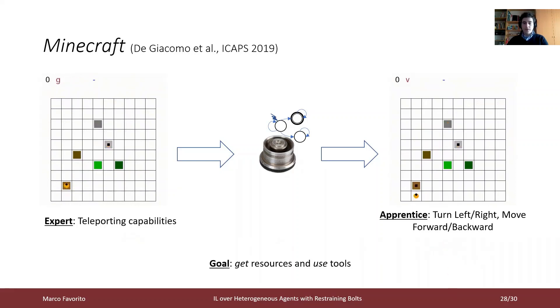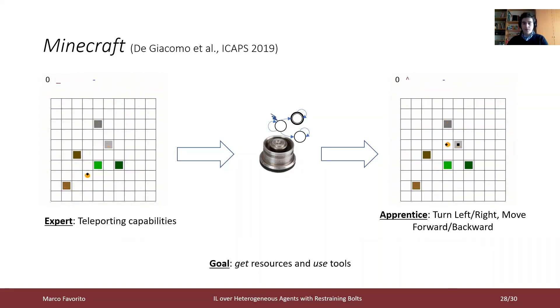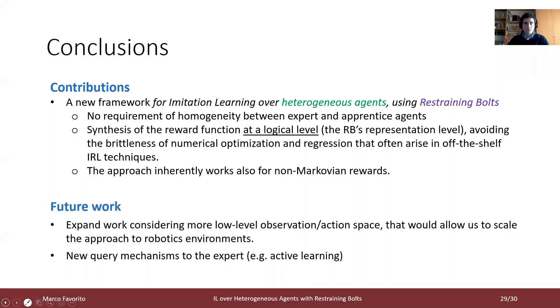In all the case studies, the generated traces were complete enough to get a good approximation of the restraining bolt, hence letting the apprentice agent learn the optimal policy against the target reward.